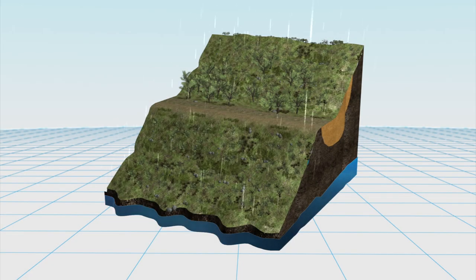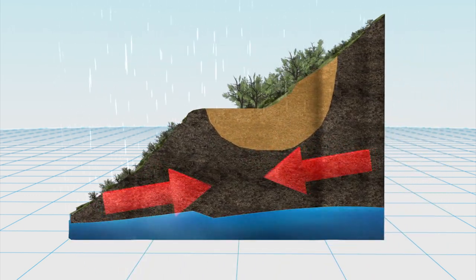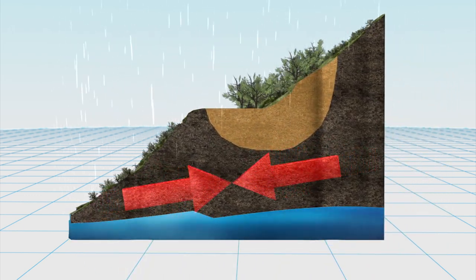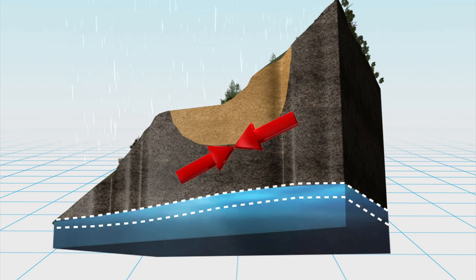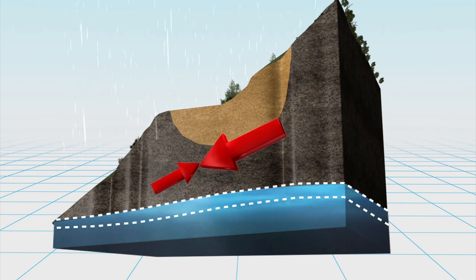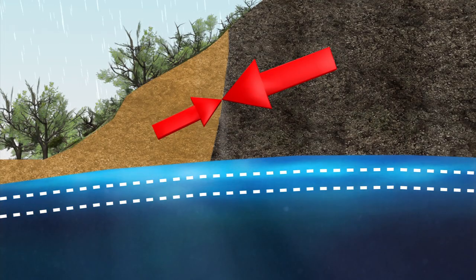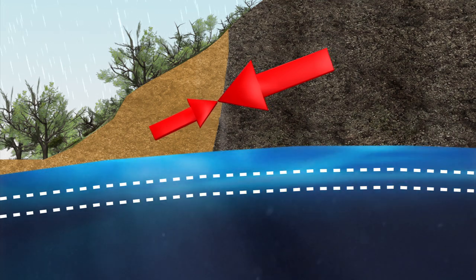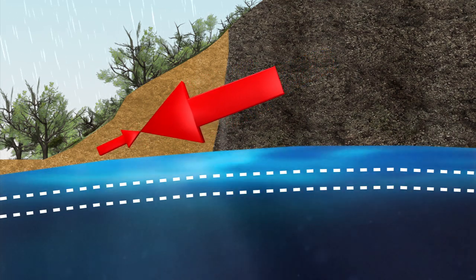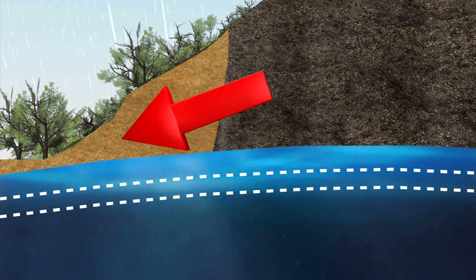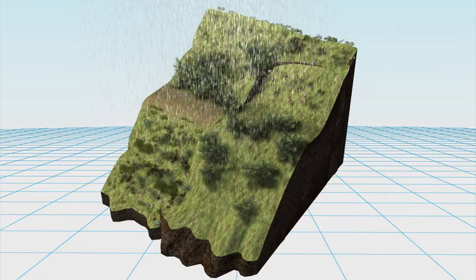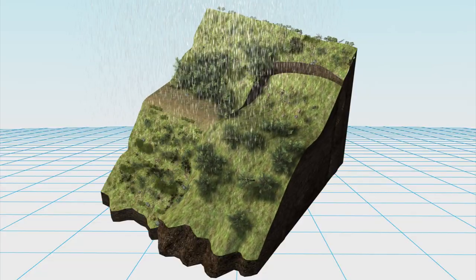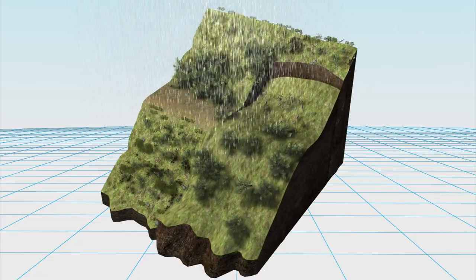Landslides occur when severe rainwater causes the soil to loosen. Rainwater causes groundwater to rise rapidly, saturating the soil. The slope becomes unstable as groundwater reduces the internal shear strength of the soil. Gravity and hydraulic pressure from rainwater overcome the unstable block of the soil's resistance, triggering a landslide.